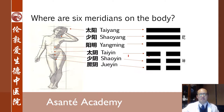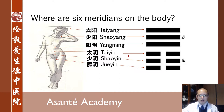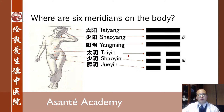You might be confused about what this means, so let me explain. We use the six meridian method to make Chinese medicine diagnoses. We use the six meridian method to make prescriptions for people. We also use the six meridian method to describe the structure of the human body.